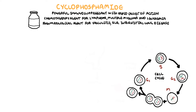Cyclophosphamide is an alkylating agent and works by disrupting the cell cycle, targeting rapidly dividing cells such as cancer cells as well as immune cells, which will subsequently cause immunosuppression. For this example, let us say cyclophosphamide is used to treat rheumatological conditions, so the aim is to suppress the immune system.